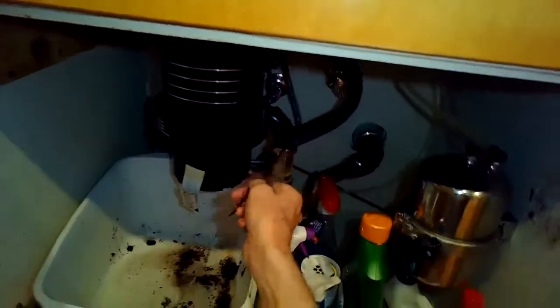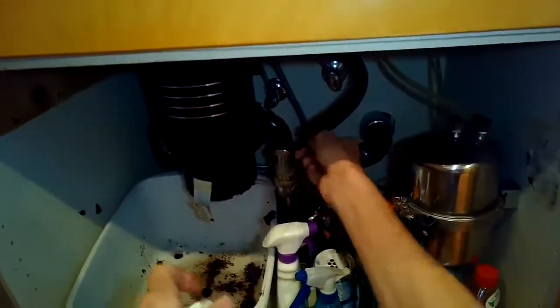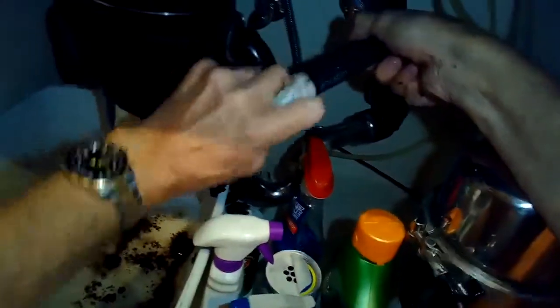Sometimes these tubes, when they bend to come into the disposer, the bend is too severe. It causes a crimp and that restricts the water too. So you have to keep an eye out for that. This one I think was just full of junk.